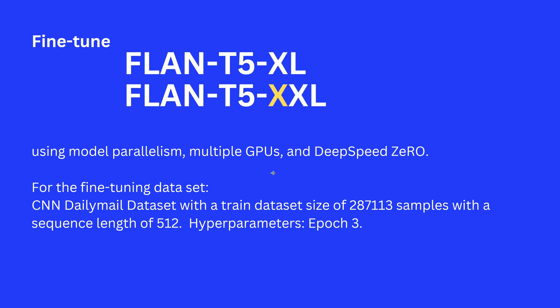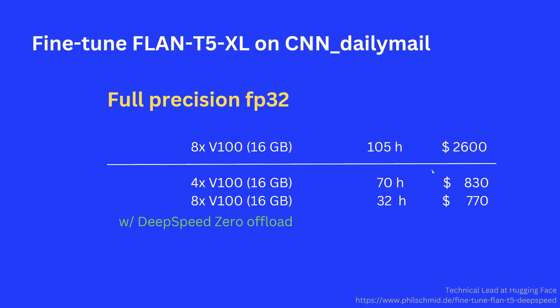To know what we are paying for, we use the CNN Daily Mail dataset shown in my last video. We have close to 300k samples, a sequence length of 512, and we go for three epochs, which is a rather conservative, minimal approach. So how much does it cost?